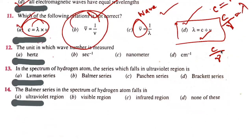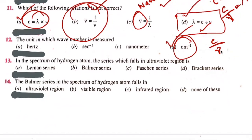The unit in which wave number is measured is centimeter power minus 1. Option D is correct. Thirteenth question: In the spectrum of hydrogen atom, the series which falls in the ultraviolet region is the Lyman series. Lyman is the correct answer.